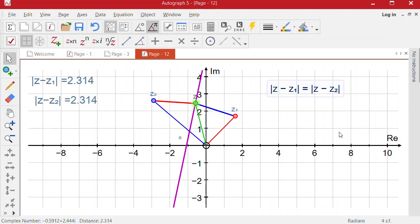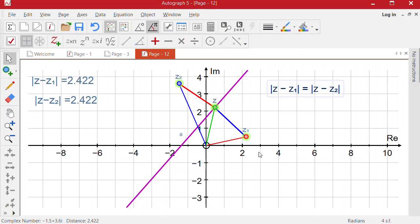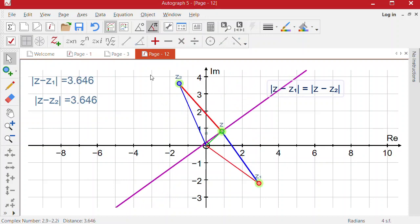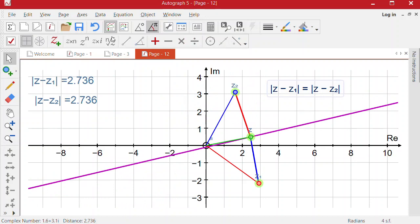And as we move that up and down, we can see the modulus stays the same. So the locus here is a perpendicular bisector between the two complex numbers, z1 and z2. And if we move those z1 and z2 around, we can see it's still a perpendicular bisector between those two points.